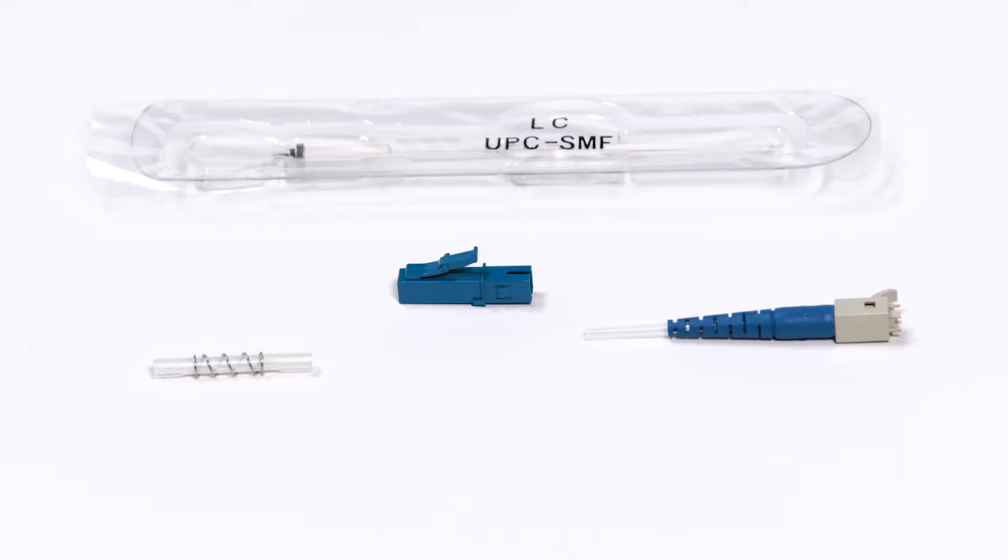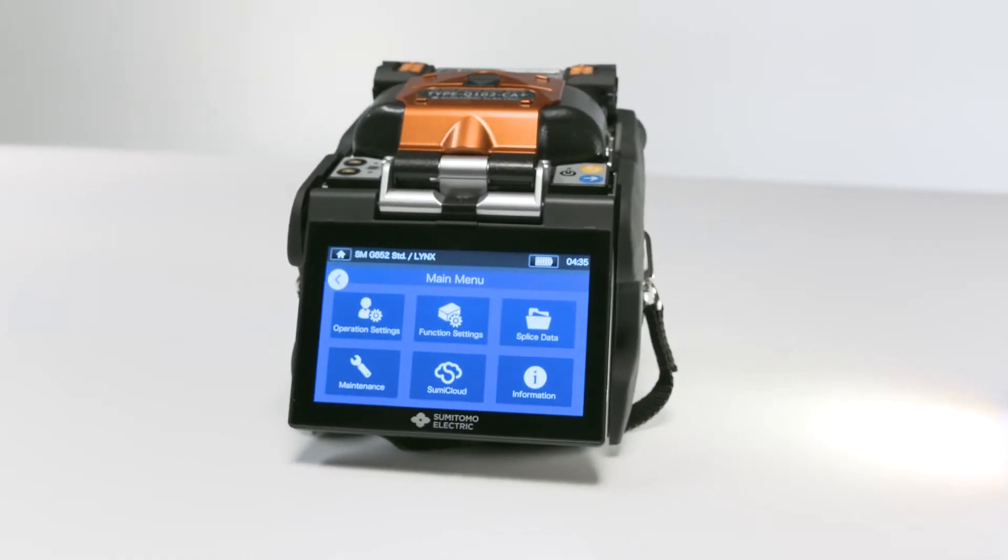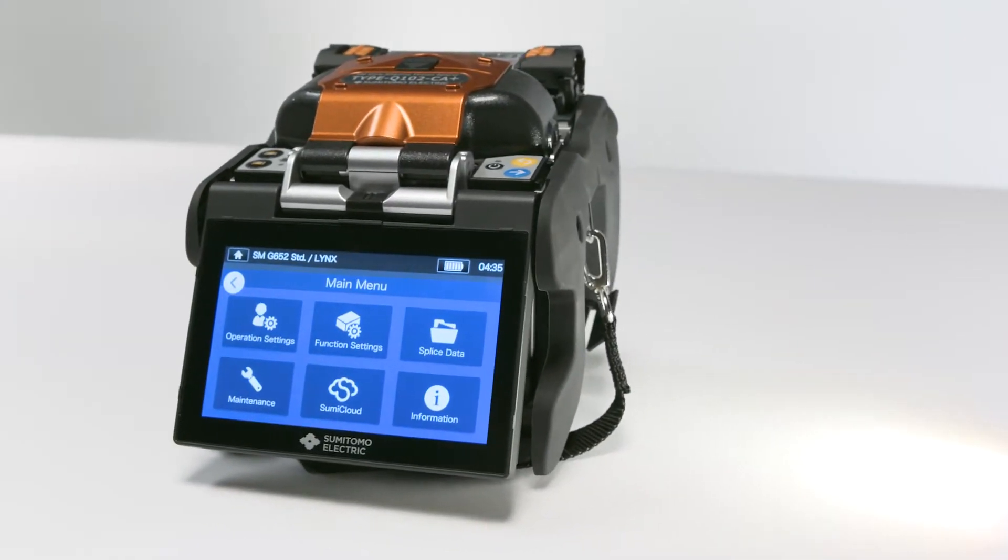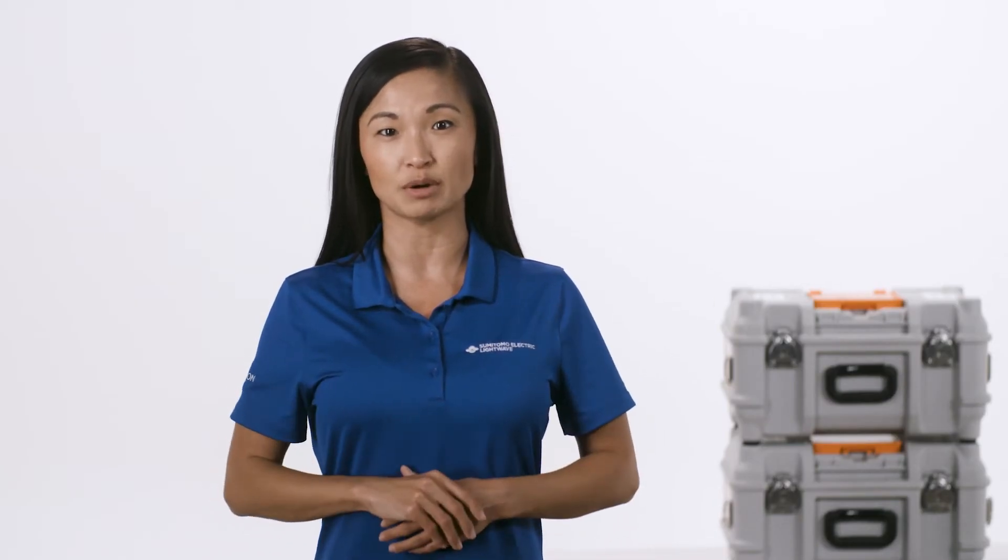For this demonstration, we'll be using the Q102CA+, Sumitomo Electric's latest core alignment fusion splicer. Let's get started. Use Sumitomo Electric's supplied tools for cordage and fiber splicing preparation.